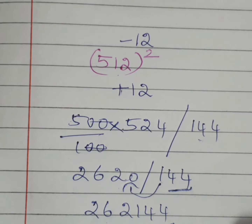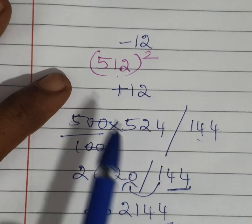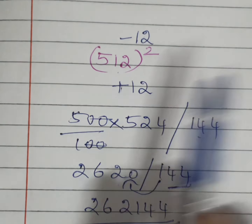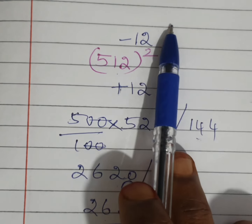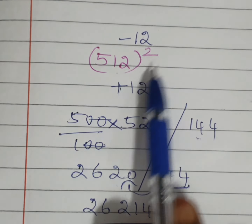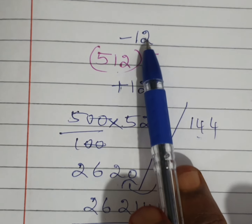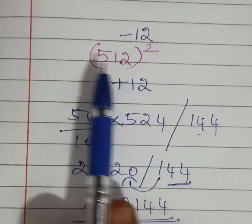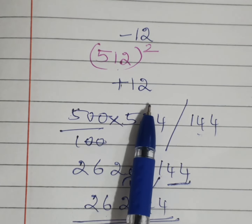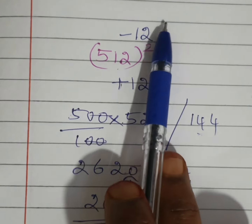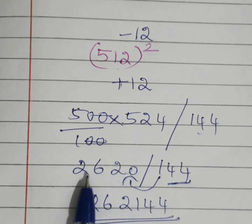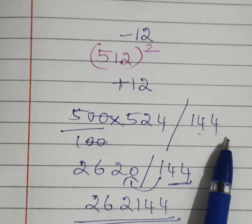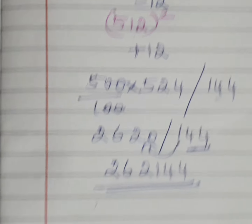The method is very simple: make the number nearer to a round hundred. For 512, subtracting 12 gives 500. Above put minus 12 and below put plus 12. 512 plus 12 is 524, 512 minus 12 is 500. Divide by 100, and 12 square is 144.